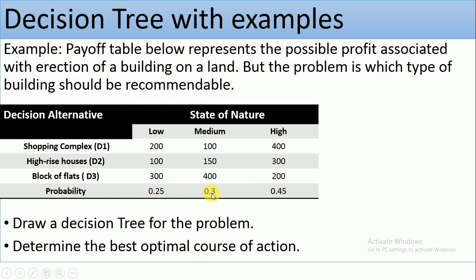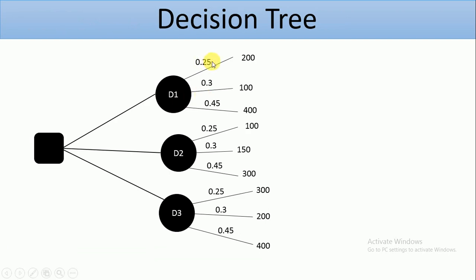And also you can see that there are probability estimates for each state of nature. We have 0.25, 0.3, and 0.45. And that's what we apply here: 0.25, 0.3, 0.45 for each decision alternative.